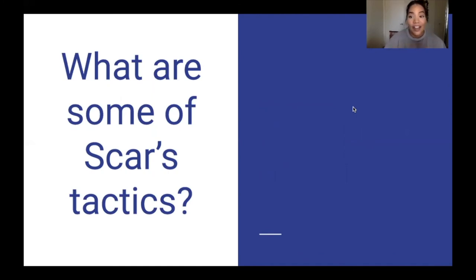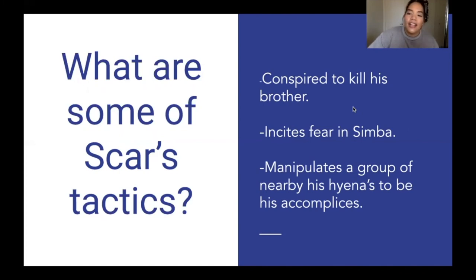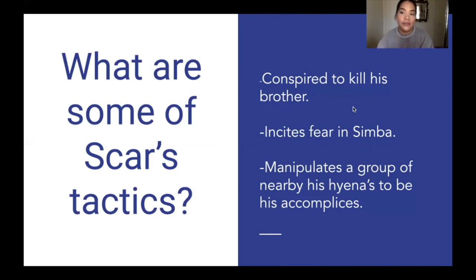We see Scar's obstacle most textually in the Circle of Life — Scar is not happy about Simba being born because it means there is another rightful heir to the savannah that is not him. What are some of Scar's tactics? Most commonly: conspiring to kill his brother, which we see in the stampede scene; inciting fear in Simba by sending him to the elephant graveyard and telling him never to return; and manipulating a group of hyenas to be his accomplices.